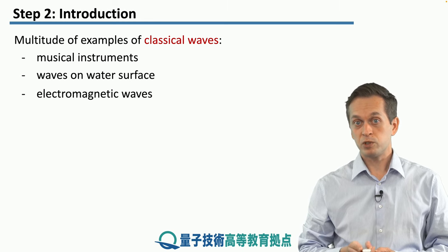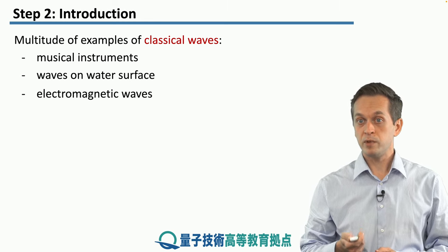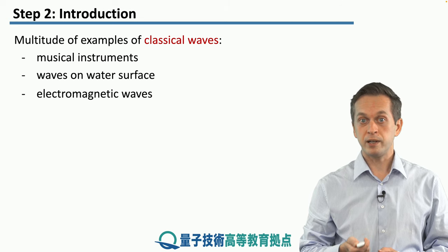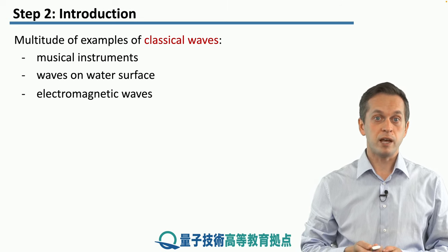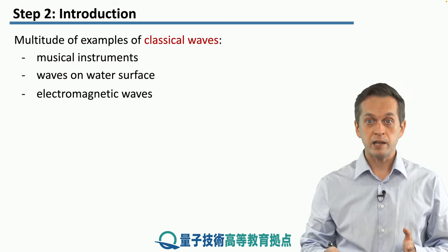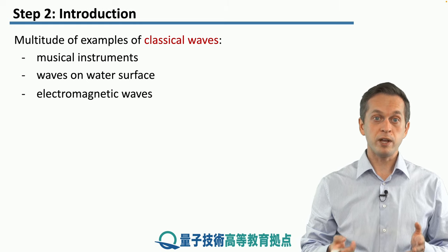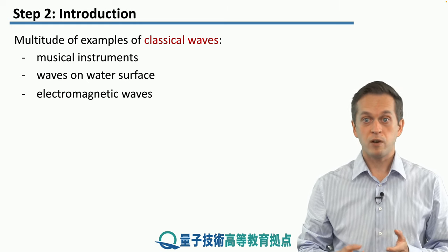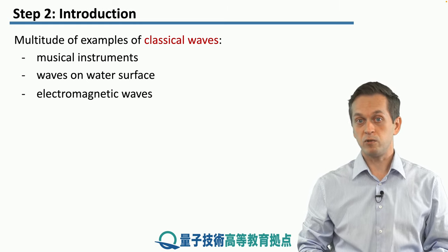An example of waves which do not strictly require some medium to propagate through are electromagnetic waves. These waves include anything from light to radio waves, Wi-Fi signals, and so on.